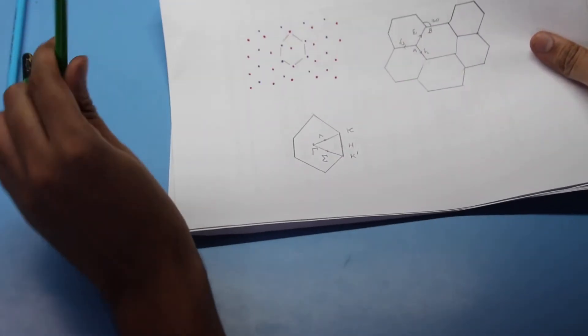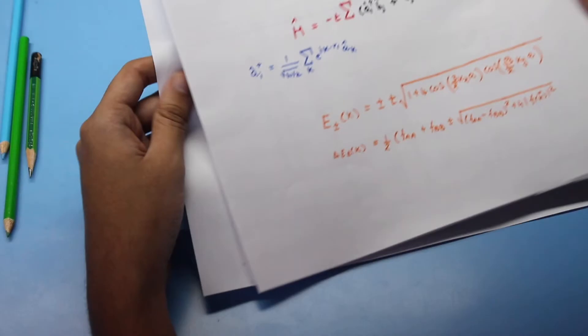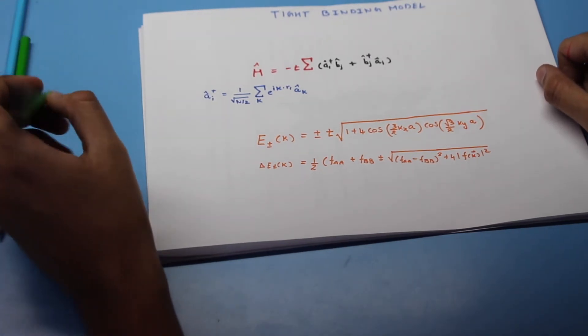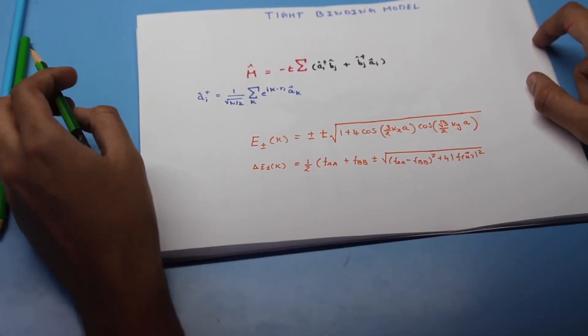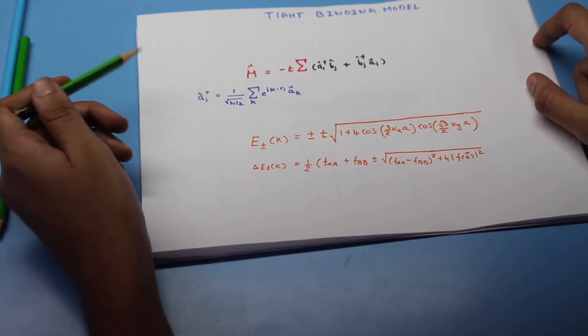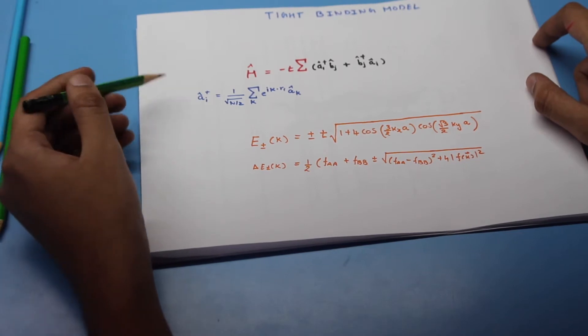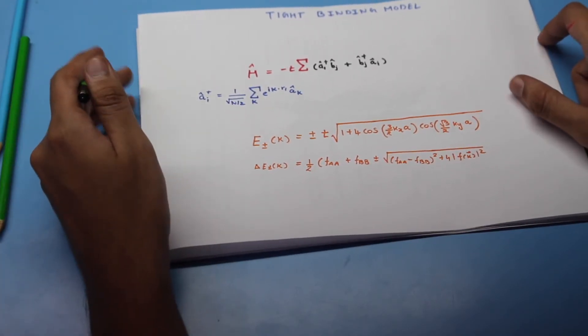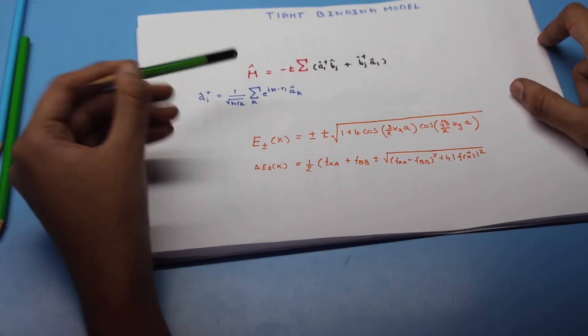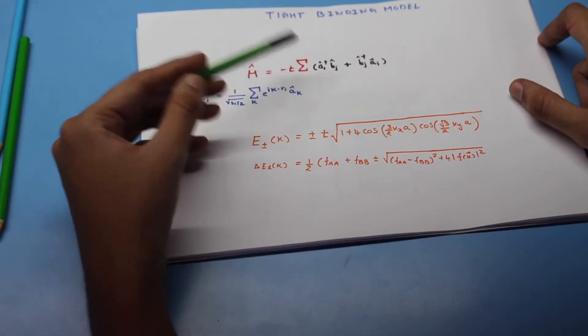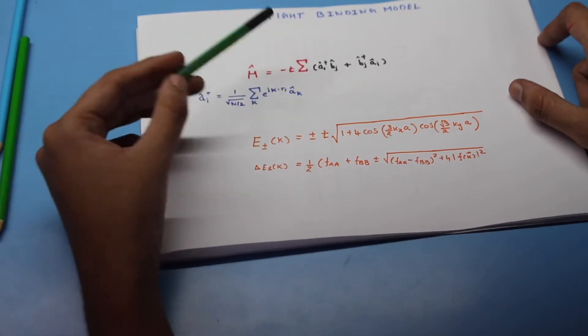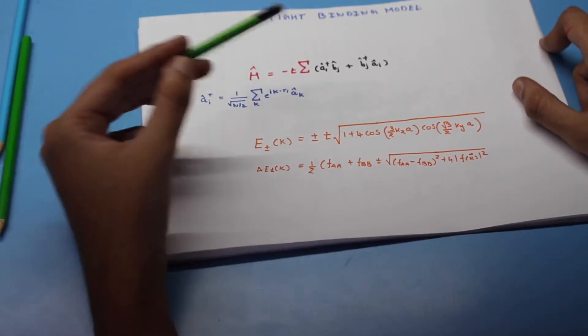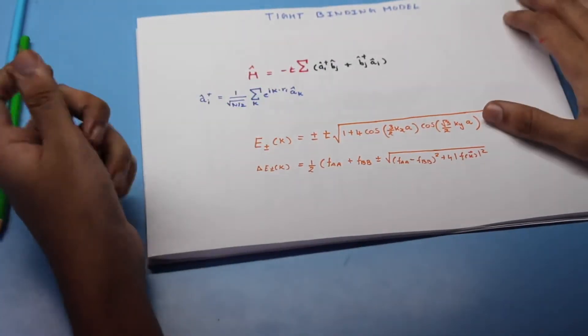Before discussing the band structure we should know how do we actually obtain that band structure. By not going too much into the mathematics, to say briefly, the band structure of graphene comes by solving the tight binding model. What is tight binding model? It is a model in which we consider the ions or the constituents to be closely packed near to one another and hence the term tight binding. This gives us an interaction Hamiltonian H which is T sum of these two operators AI and BJ. AI dagger is a destructive operator and BJ is a creative operator. These correspond to the sites A and B which I have shown earlier.